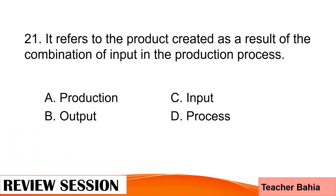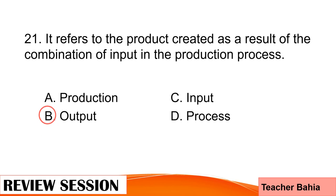Number 21. It refers to the product created as a result of the combination of input in the production process. Is this letter A. Production, B. Output, C. Input, or D. Process? The correct answer is letter B. Output.